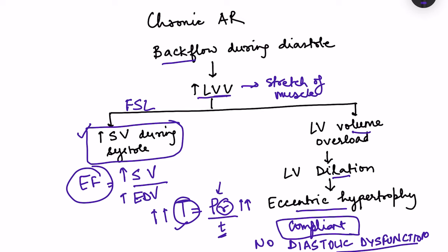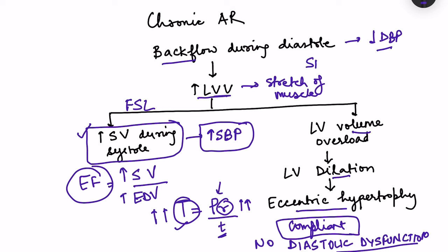Because of backflow during diastole, diastolic blood pressure decreases. Because of increased stroke volume, systolic blood pressure increases. This widens the pulse pressure (SBP minus DBP), which in aortic regurgitation exceeds 60 mmHg, compared to the normal value of around 40 mmHg.